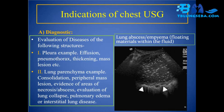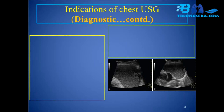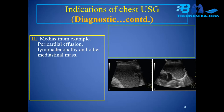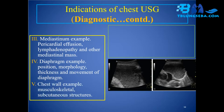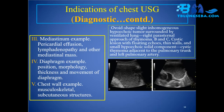Indications continued: (3) Mediastinum — examples include pericardial effusion, lymphadenopathy, and other mediastinal masses. (4) Diaphragm — position, morphology, thickness, and movement. (5) Chest wall — musculoskeletal and subcutaneous structures. Ovoid-shaped, light, inhomogeneous hypoechoic tumors surrounded by ventilated lung are shown, including thymoma via right parasternal approach and cystic thymoma adjacent to the pulmonary trunk and left pulmonary artery.